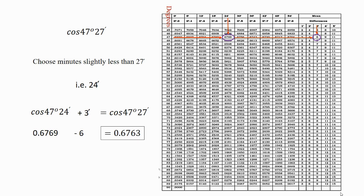The rule for the use of a natural cosine table is that we have to subtract the mean difference. The reason is that for a greater value of cos θ, θ is smaller. So cos(47°24') has a greater value than cos(47°27'). This is because cos(0°) = 1 and cos(90°) = 0, so cosine values decrease from 0° to 90°. Therefore, we can achieve the required angle only when we subtract the mean difference.